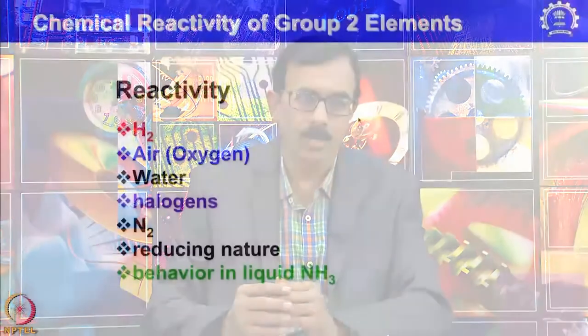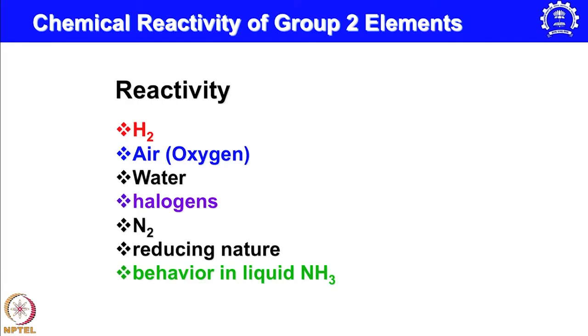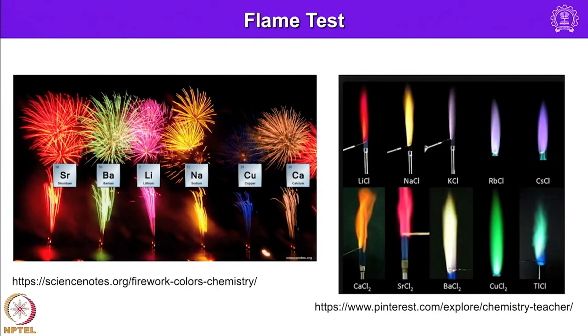In the flame test, similar to alkali metals, alkaline earth metals produce characteristic colors: calcium imparts a brick red color, strontium imparts crimson red, and barium imparts a characteristic apple green color. Because of these vibrant colors, alkaline earth metals are also used in fireworks.